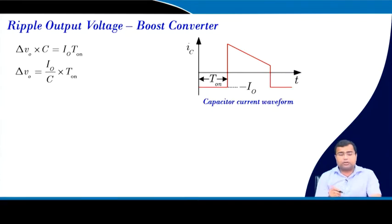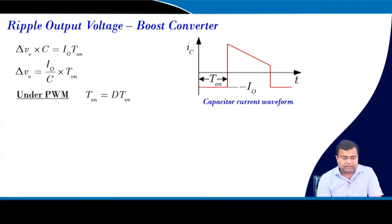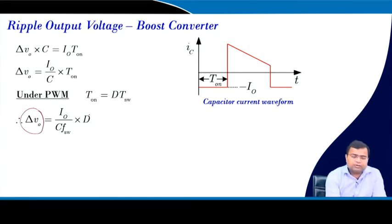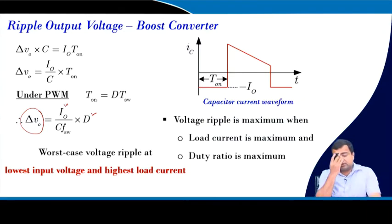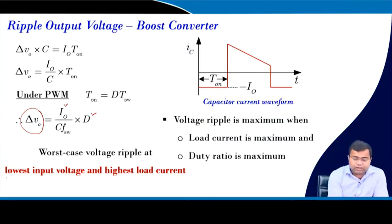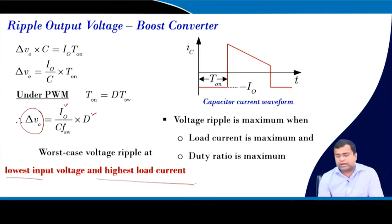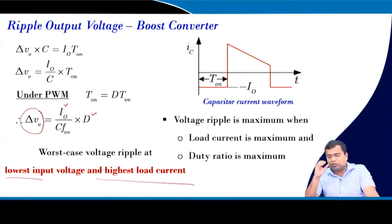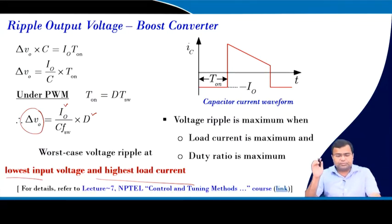The output voltage ripple for the boost converter under PWM is a function of load current, and it is maximum when D is maximum and load current is maximum. So the worst-case voltage ripple occurs at the lowest input voltage and highest load current. We must carefully select the capacitor to meet ripple constraints across the entire range of load and input voltage conditions, as discussed in lecture 7.